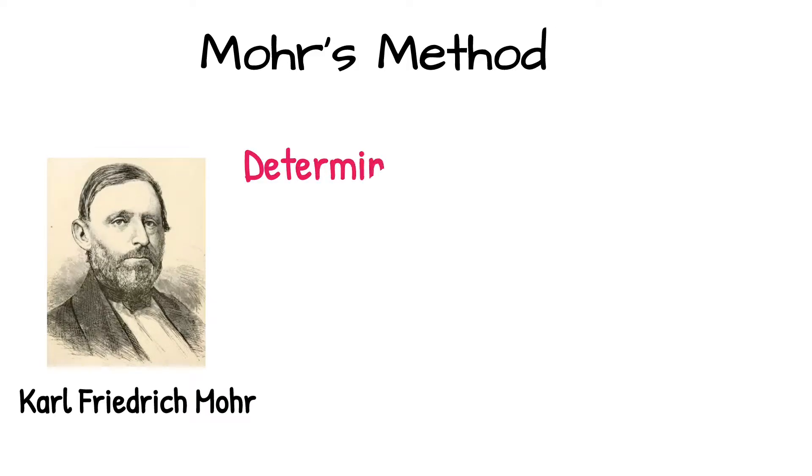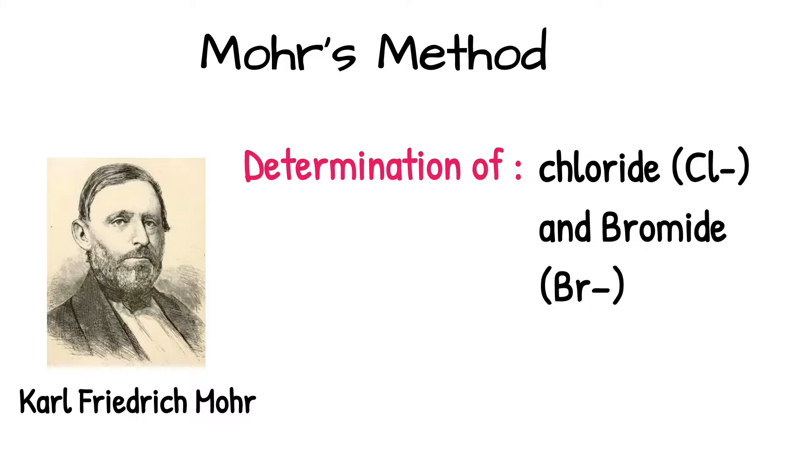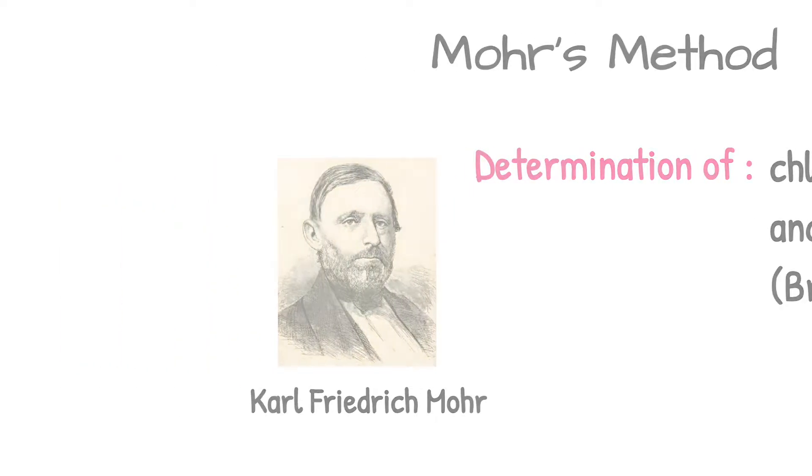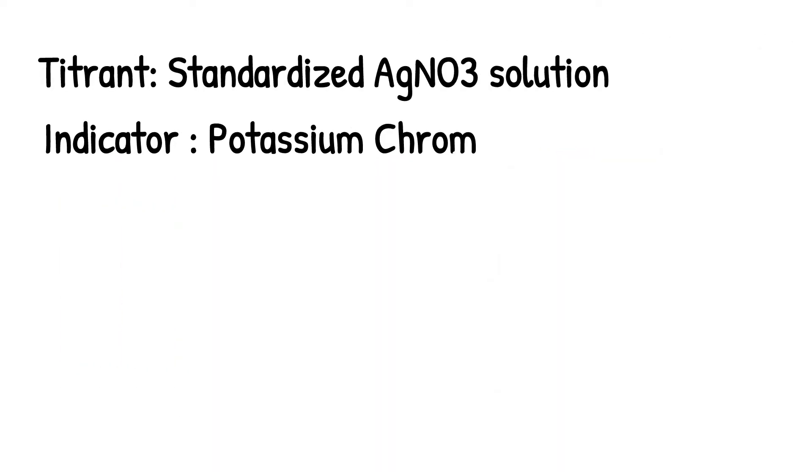Mohr method is used to determine chloride and bromide, for example NaCl, NaBr, KCl, KBr, etc. Titrant used here is standardized AgNO3 solution and indicator used here is potassium chromate K2CrO4, 5% solution.